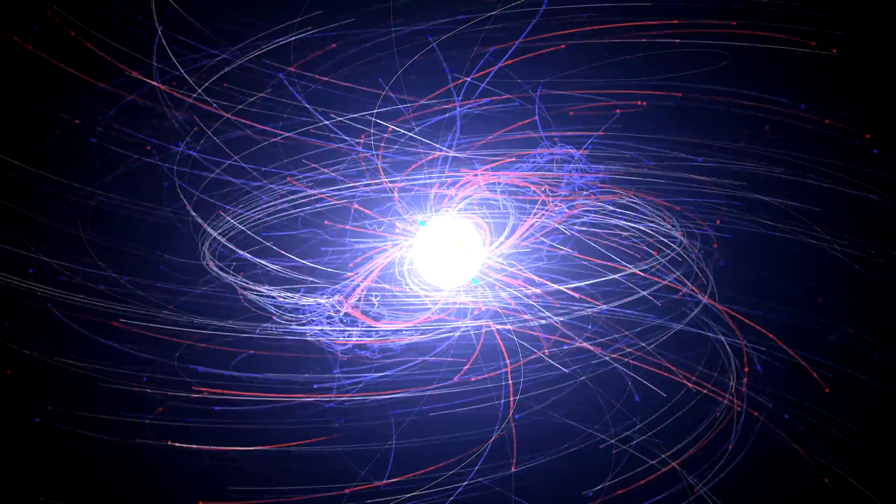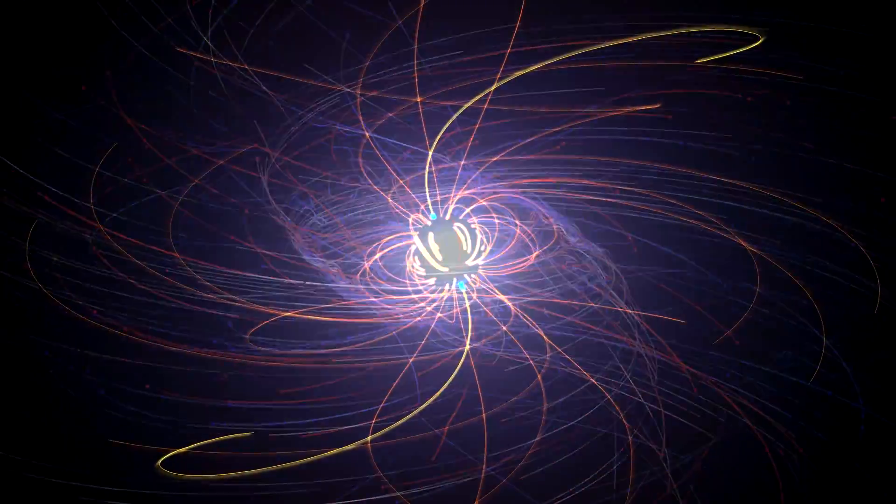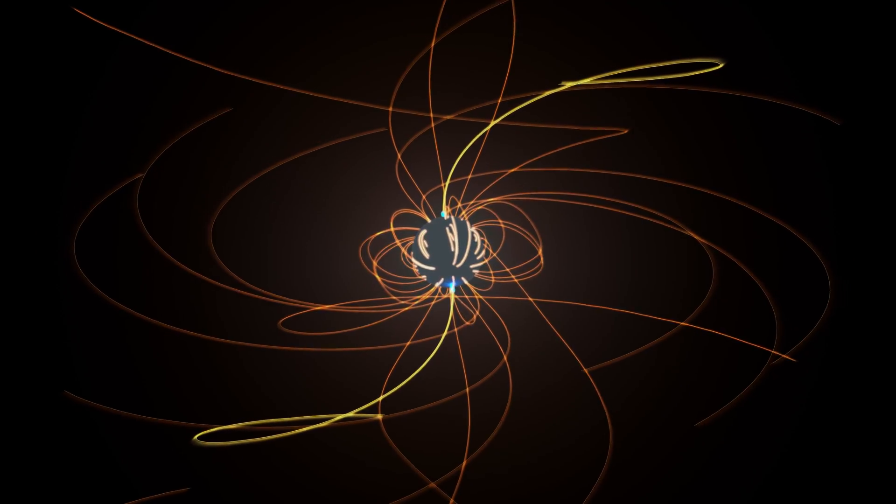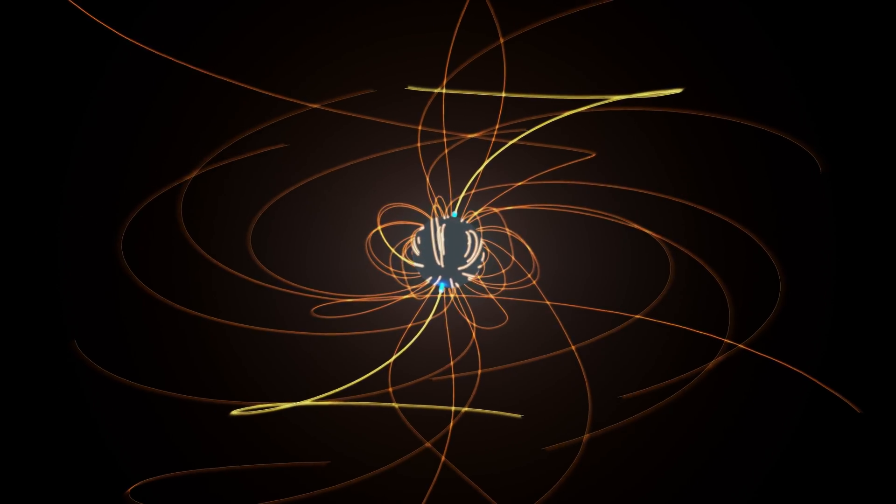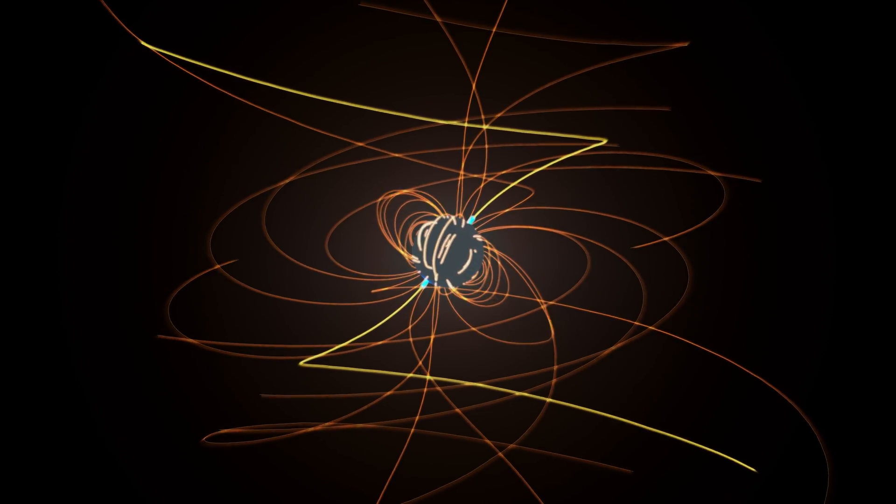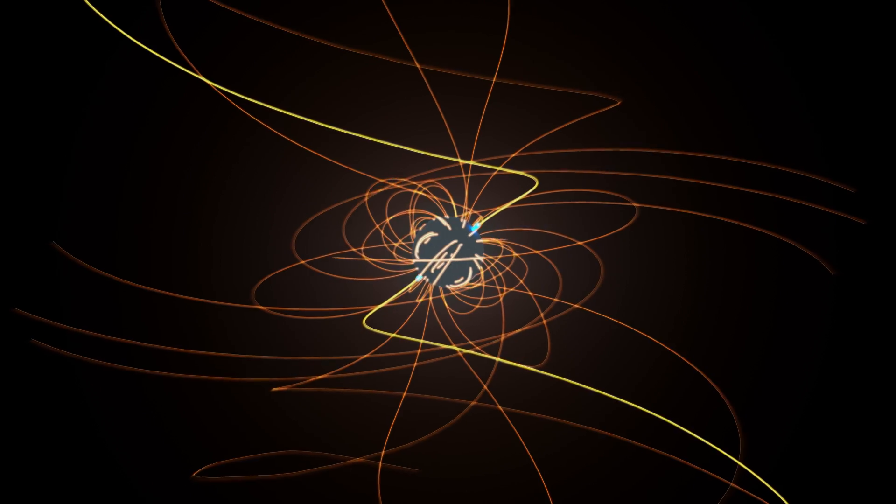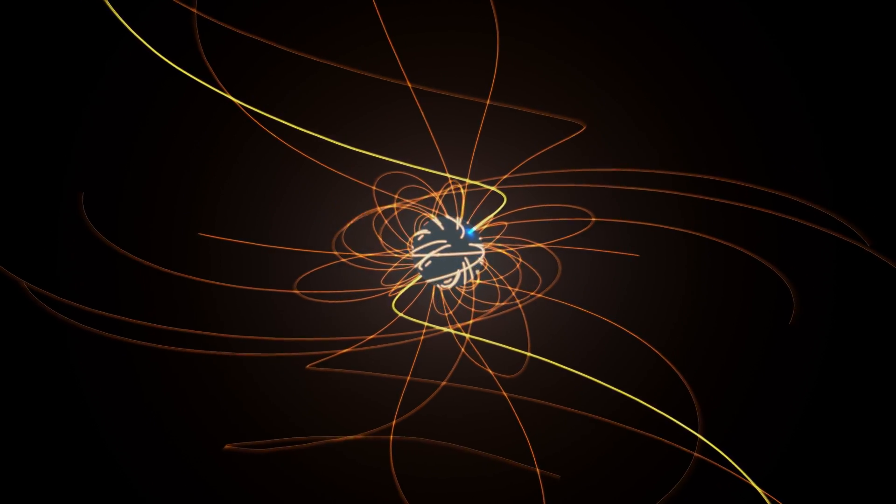Now, new computer simulations are providing surprising insights. A pulsar contains some of the strongest magnetic fields known and can spin thousands of times a second. That means it's a powerful dynamo, generating an electric field so strong particles are ripped out of the surface and accelerated into space.